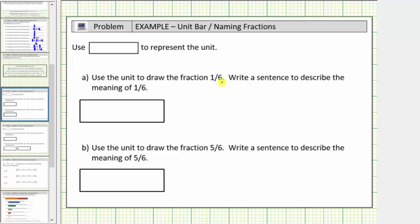So for the fraction 1 sixth, we begin by cutting the unit into six equal parts. So if the rectangle is the unit, we cut this into six equal parts, and because the fraction is 1 sixth, we shade one of the six equal parts. This would be the model for 1 sixth. And now to write a sentence to describe the meaning: 1 sixth is one of six equal parts which makes up one whole unit.